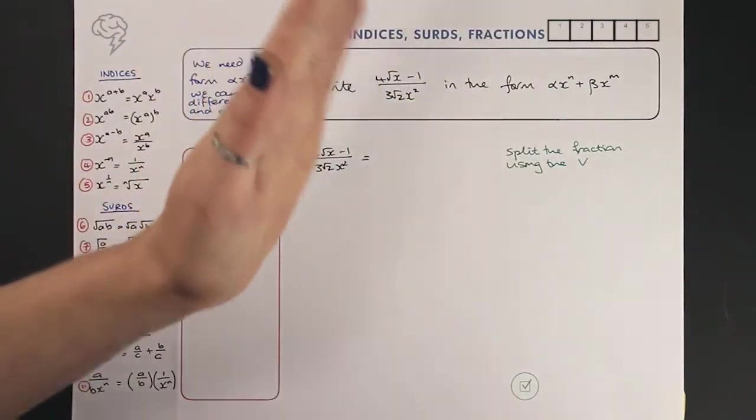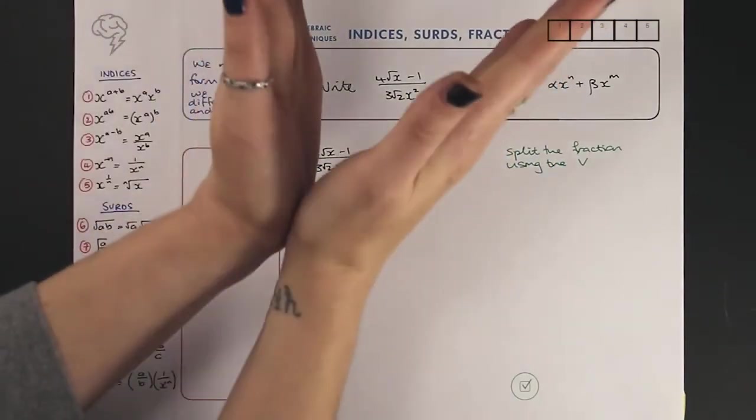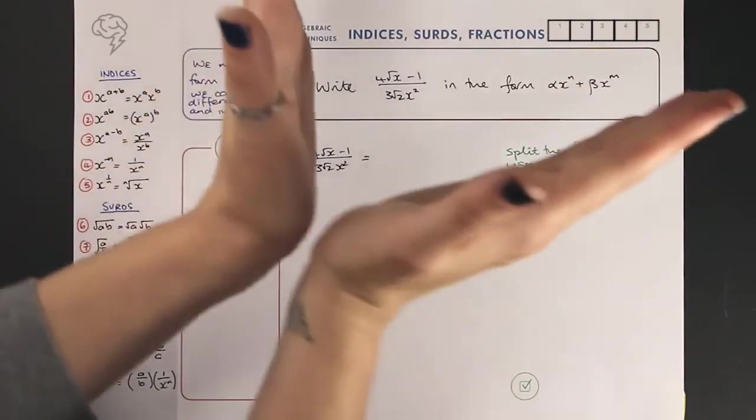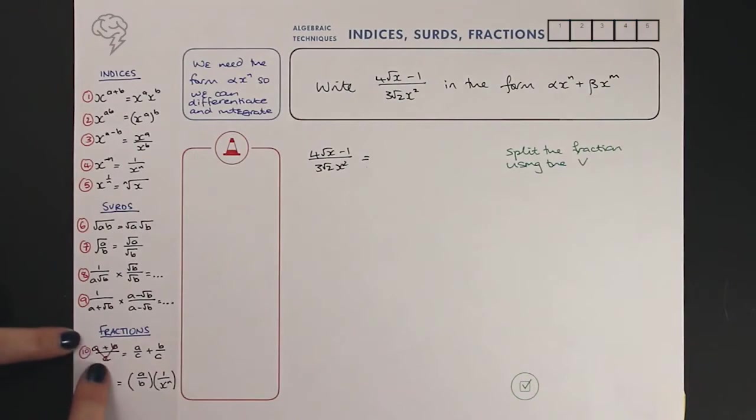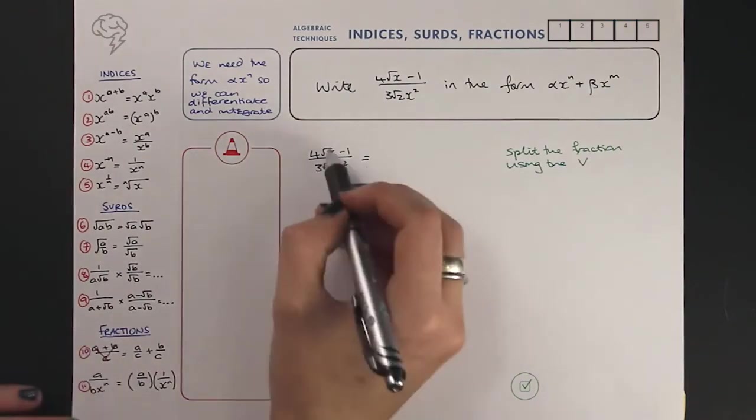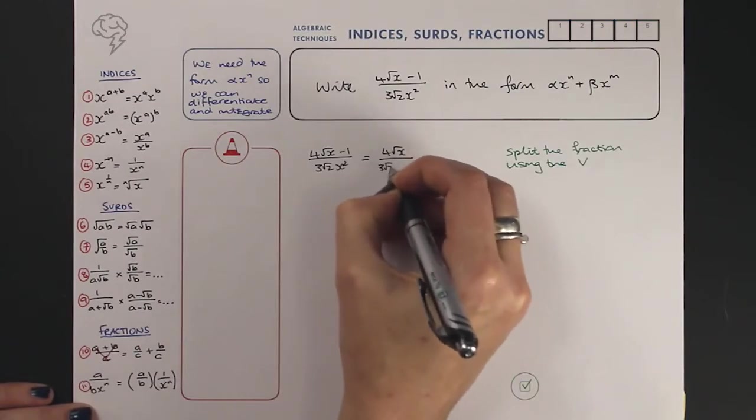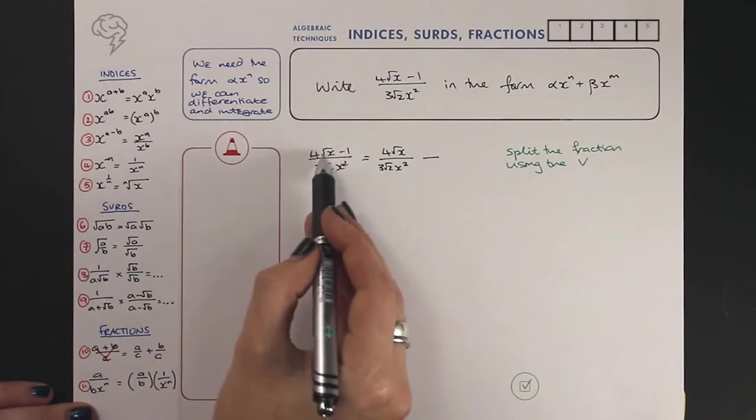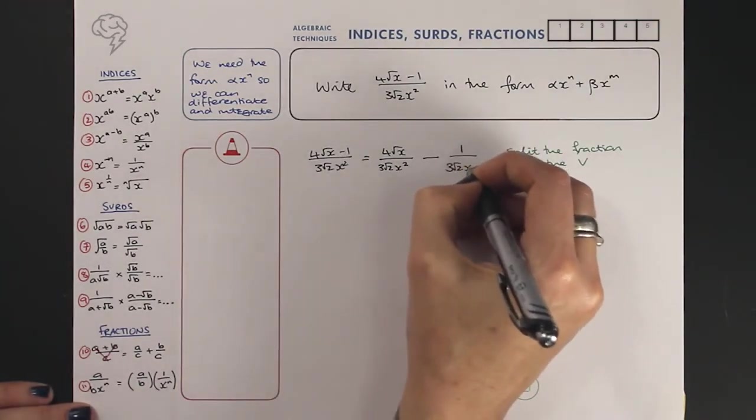The reason I call it a v method is that the left hand side looks like a v, and what we're doing is taking something that looks like this with two things on the top, one thing on the bottom, and pulling it apart into two separate fractions. The bottom stays the same for both parts, so we've got a over c and b over c. So the 4 root x is over 3 root 2 x squared, then there's a minus, and then there's a 1 which is also over 3 root 2 x squared.